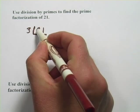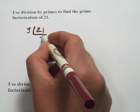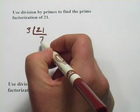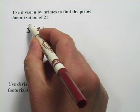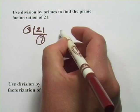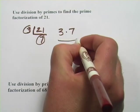So 21 divided by 3 is 7. I put the answer down here and I end up with a prime number. 7 is prime. So I can actually stop here and my prime factorization is 3 times 7. And that's my answer.